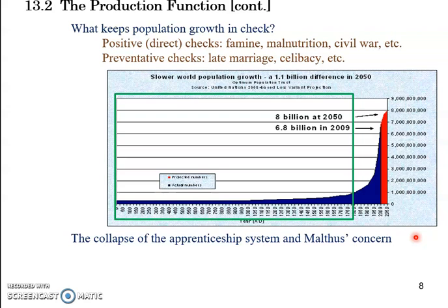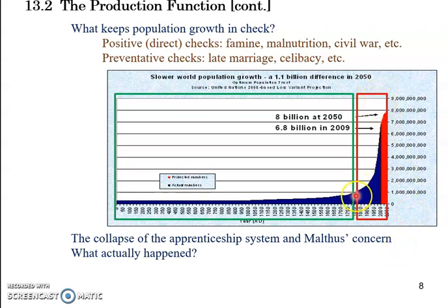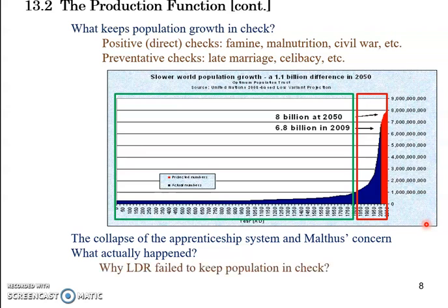Of course, what Malthus feared did not really happen. As you can see in the red box, the population continued to grow exponentially in a way that had never happened before in human history. We need to make sense of why the food supply this time did not stop population growth, and why the Law of Diminishing Returns failed to keep population in check. We'll continue looking at this in the next video, focusing on fixed inputs and the important role they play.